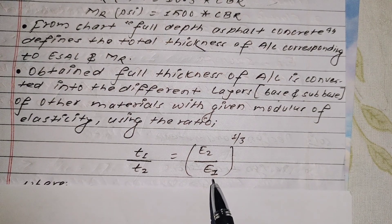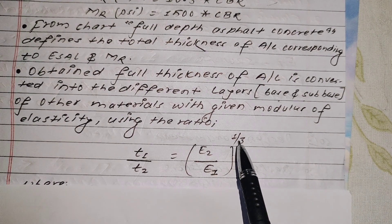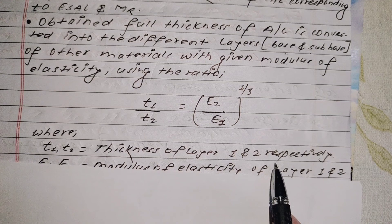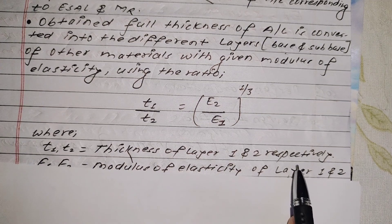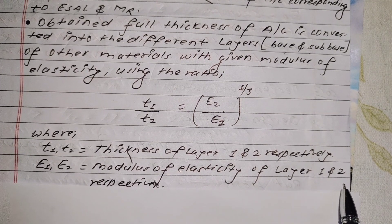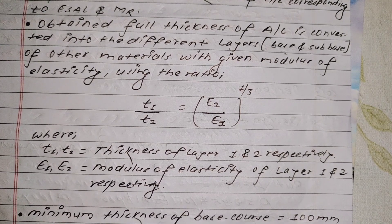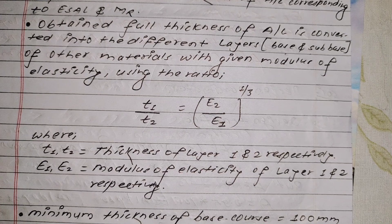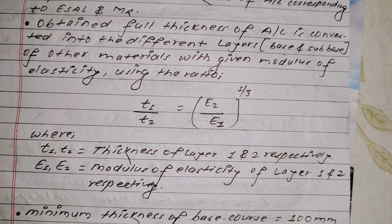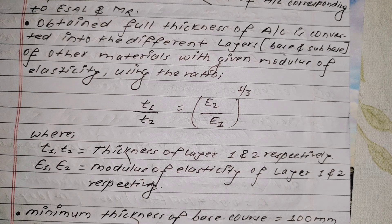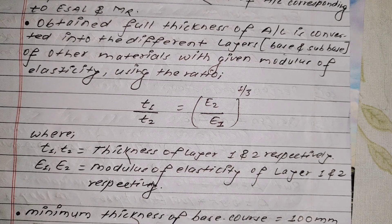The formula used is: T1 by T2 equals (E2 by E1) to the power (1/3). Here T1 and T2 are thickness of layer 1 and layer 2 respectively, and E1 and E2 are modulus of elasticity of layer 1 and layer 2 respectively. The minimum thickness of base course to be taken is 100 mm. So minimum thickness should not be less than that.